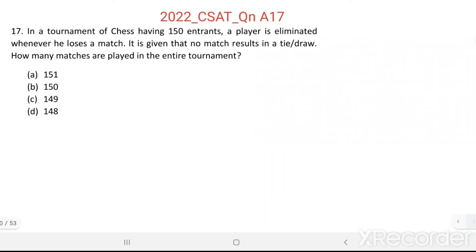Question number 17. In a tournament of chess having 150 entrants, a player is eliminated whenever he loses a match. It is given that no match results in a tie or draw. How many matches are played in the entire tournament?